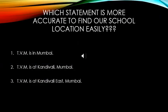Which of the following statements is more accurate to find out our school location easily? TVM is in Mumbai. TVM is at Khandi Valley, Mumbai. TVM is at Khandi Valley, East Mumbai. Yes, the third one, as it provides more details about the location. So today we are going to learn something called gradicule, which is related to the accuracy of location on the globe.